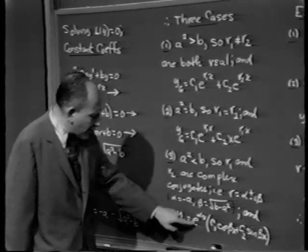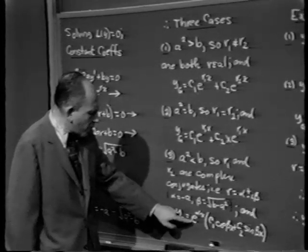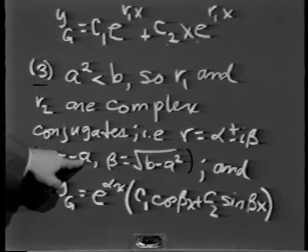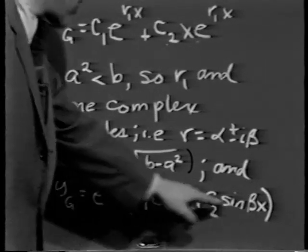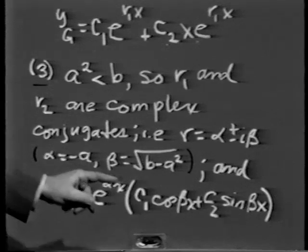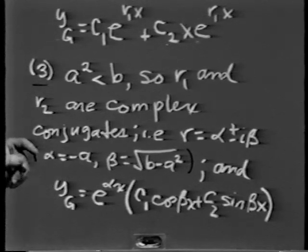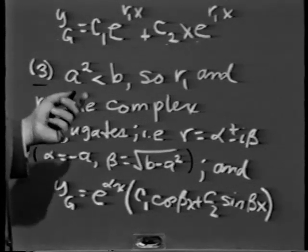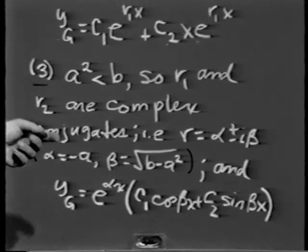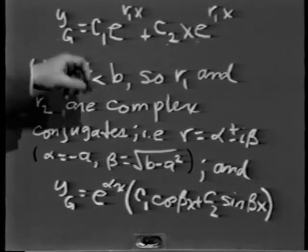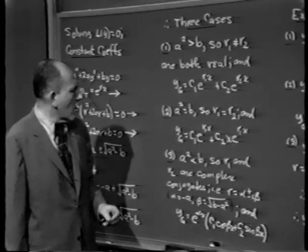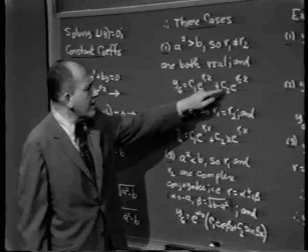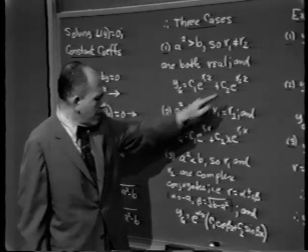Factoring out e to the alpha x, we take e raised to the alpha x power — where alpha is the real part of r — and multiply it by a linear combination of sine beta x and cosine beta x, where beta is the imaginary part of r. Notice the intrinsically different geometric nature of these various solutions. In Case 1, the general solution is the sum of two exponentials.